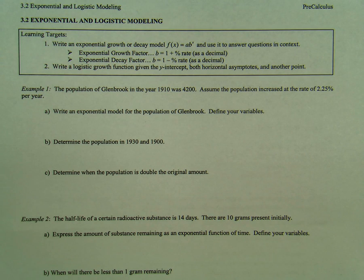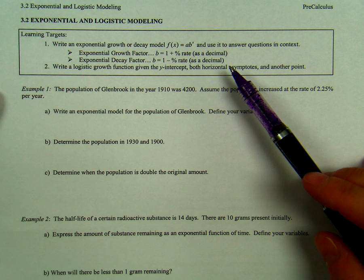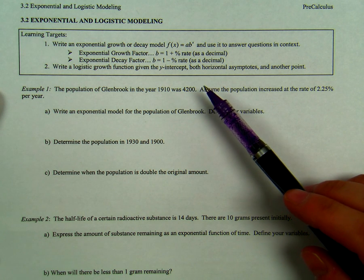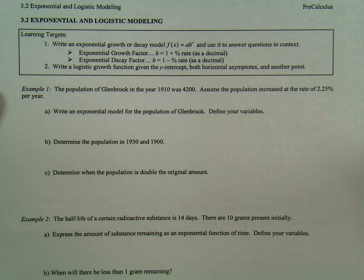Remember that exponential growth, meaning that b is equal to 1 plus the percentage rate as a decimal, or exponential decay, meaning that b equals 1 minus the percentage rate as a decimal. Our second target is to write a logistic function given the y-intercept, both horizontal asymptotes, and another point.